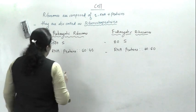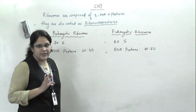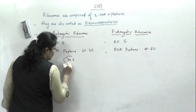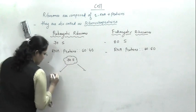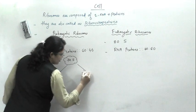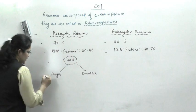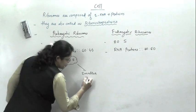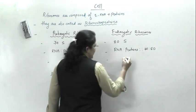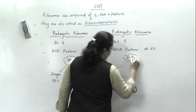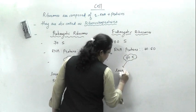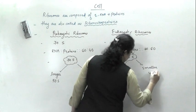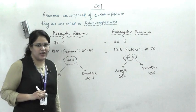Prokaryotic ribosomes are of 70S type, made up of two subunits: a larger subunit of 50S and a smaller subunit of 30S. In case of eukaryotic ribosomes, they are 80S type, with a larger subunit of 60S and a smaller subunit of 40S. Both subunits of ribosomes are composed of rRNA and proteins.